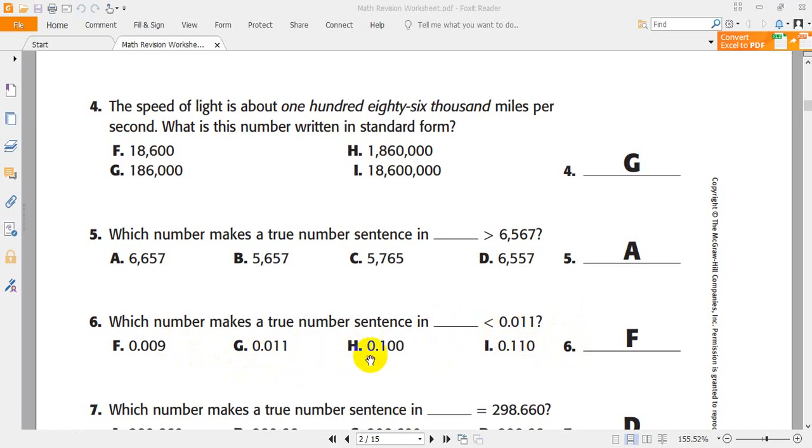0.1. It's 0.100. But it's 0.1. 0.11. So, the right answer must be F. Because it's 0.009. And we have here 0.011. So, 0.009 less than 0.011.